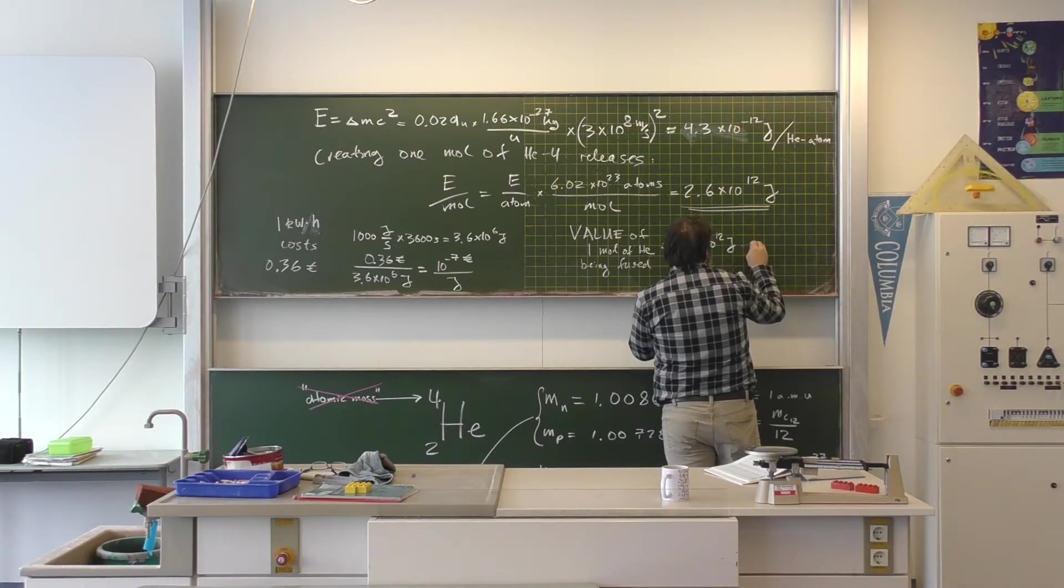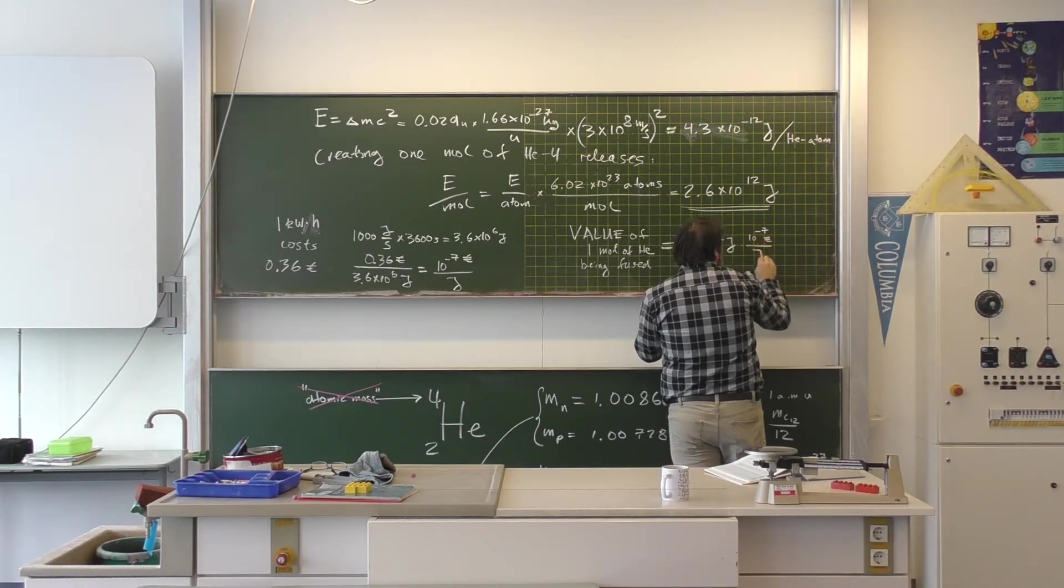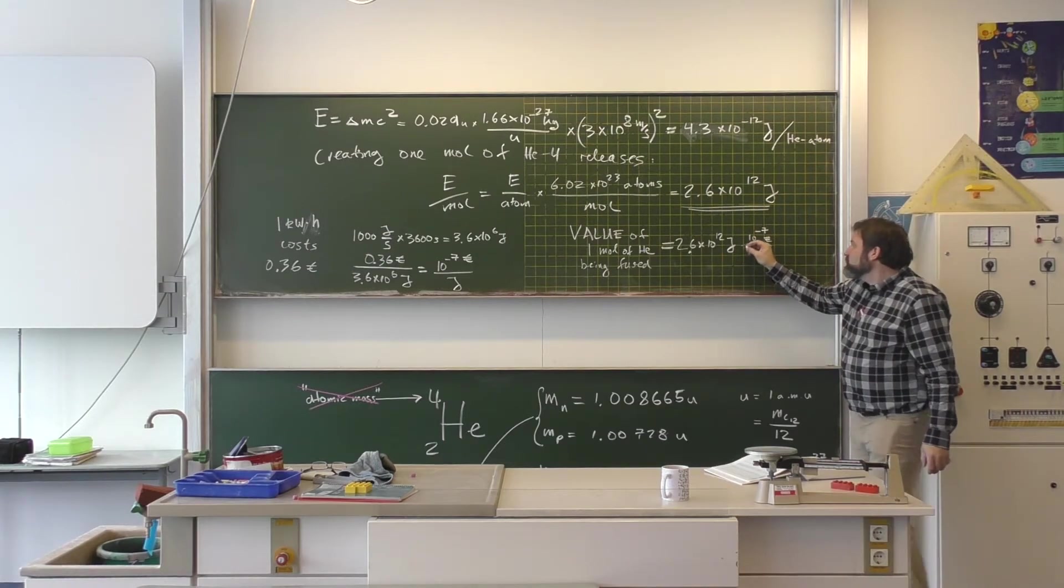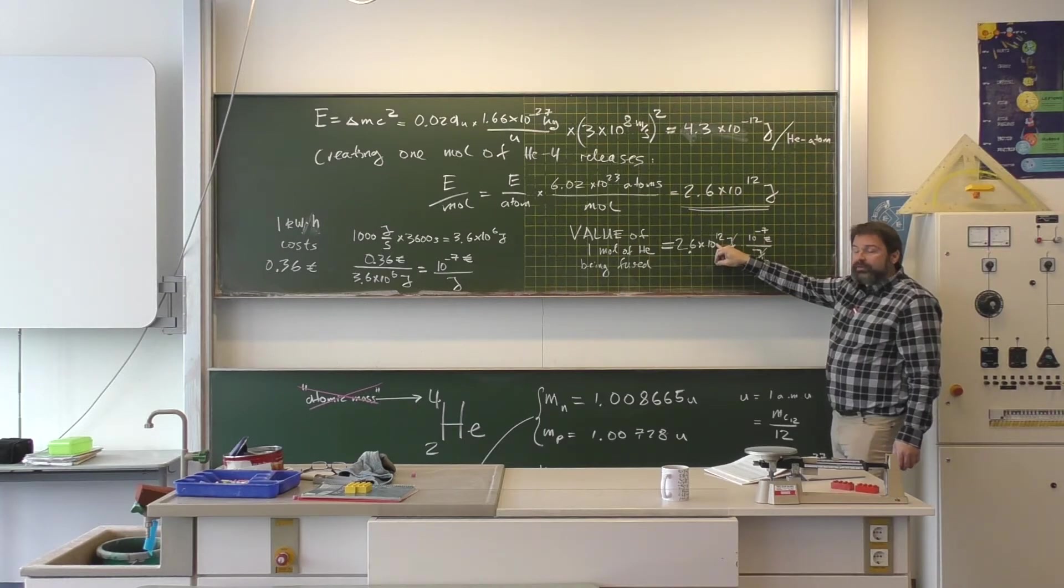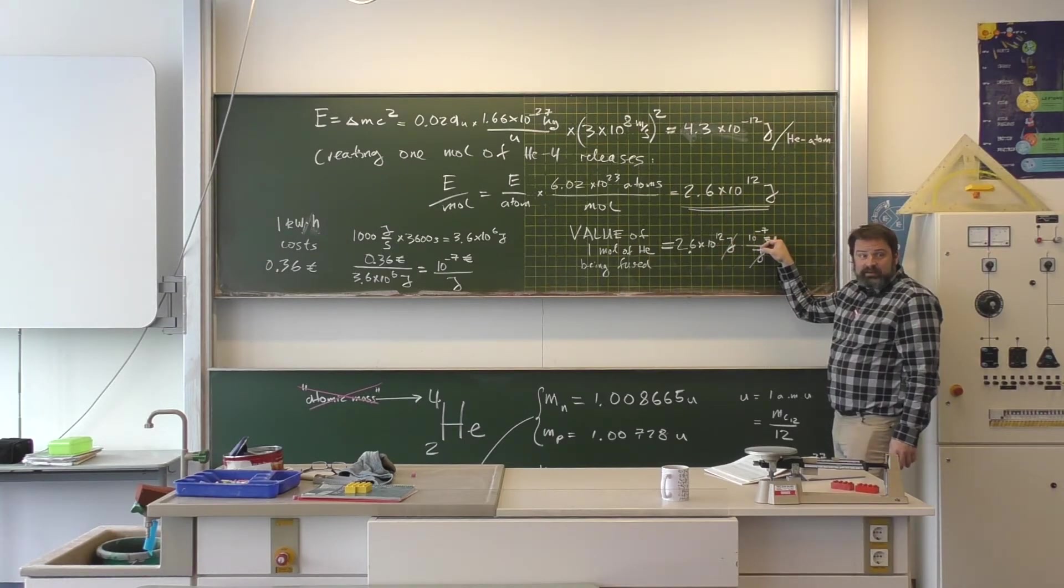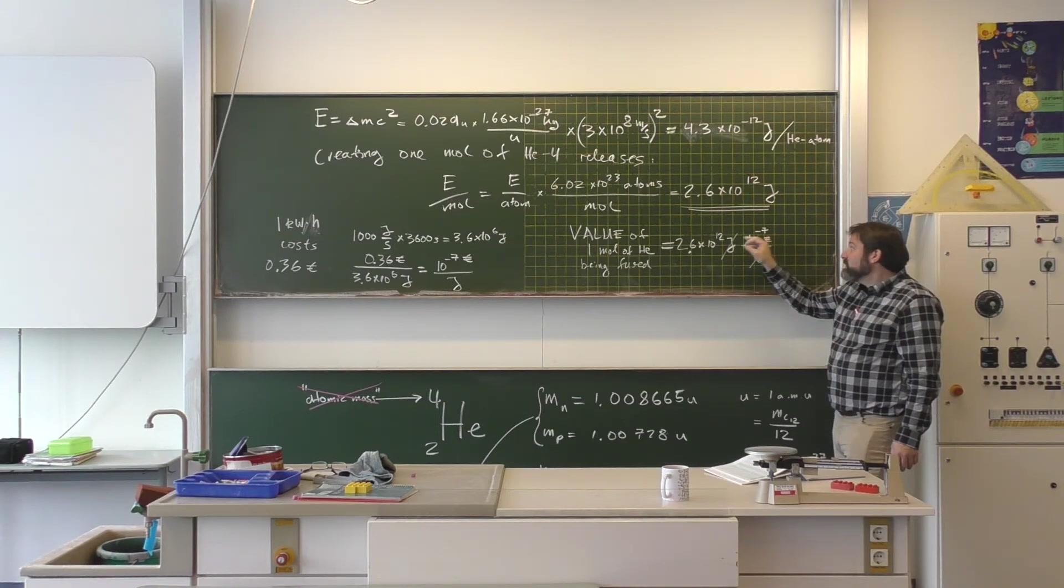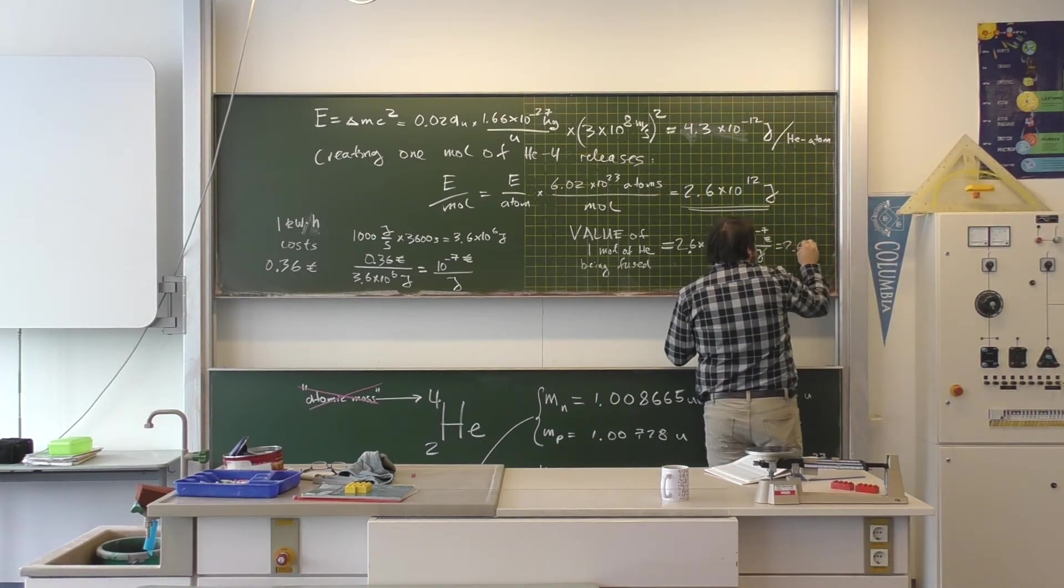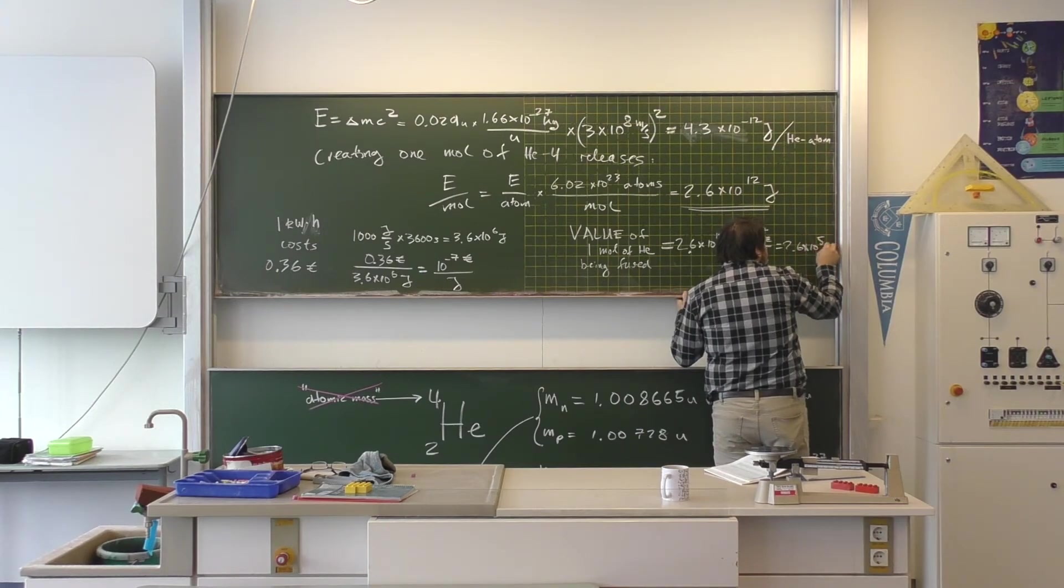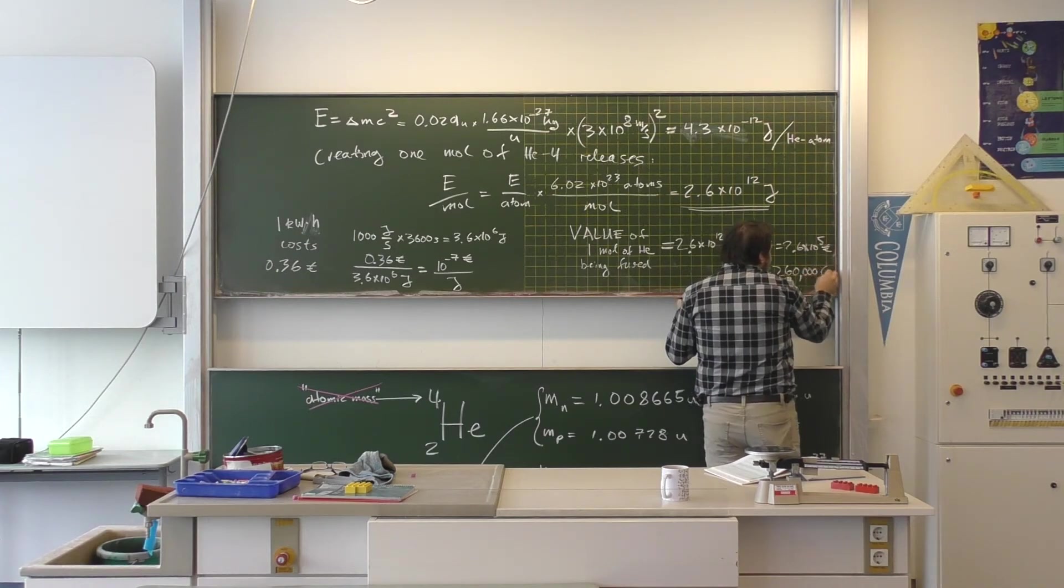So, then this times 10 to the minus 7 euros per joule and you can see, well, the joules cancel. That's good. We end up with euros. 10 to the 12 times 10 to the minus 7 is 10 to the fifth. So this is 2.6 times 10 to the 5 euros or 260,000 euros.